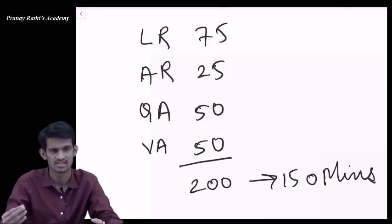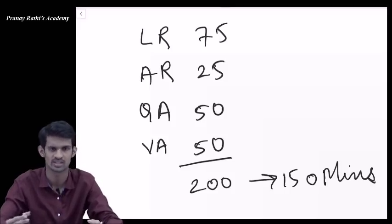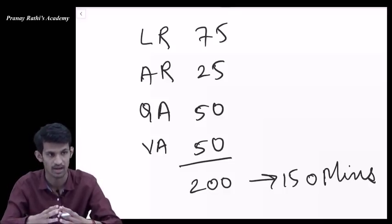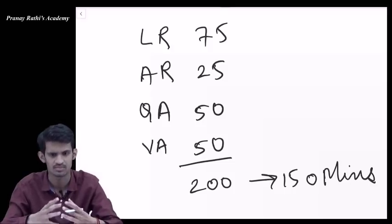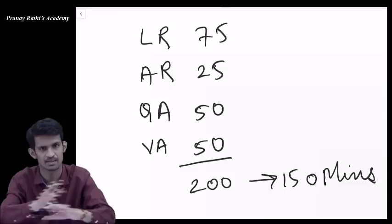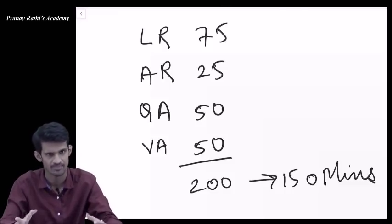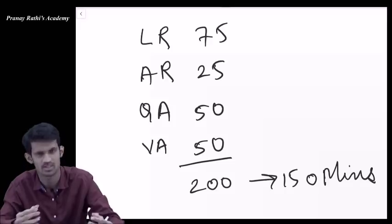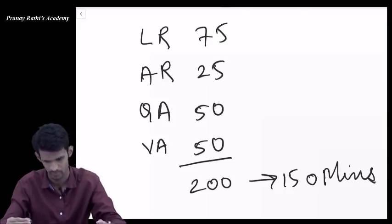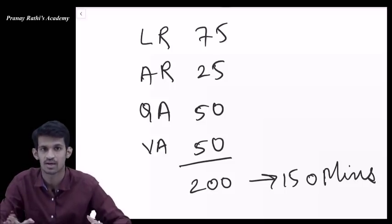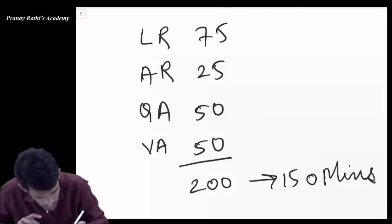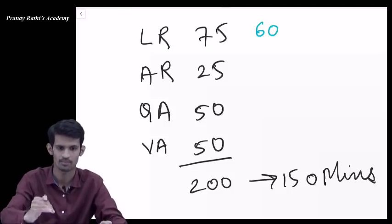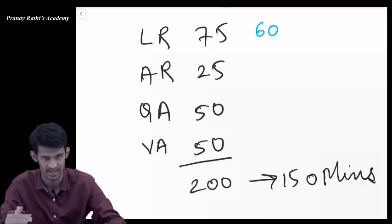For logical reasoning, which is 75 questions, our classroom strategy covers the most important topics. Five topics include mathematical inequalities, syllogisms, coding-decoding, and input-output. If you master these 25 marks worth of topics, you should be able to get 60 marks in logical reasoning. This is an achievable value, considering the best case scenario that might apply to 10% of candidates.